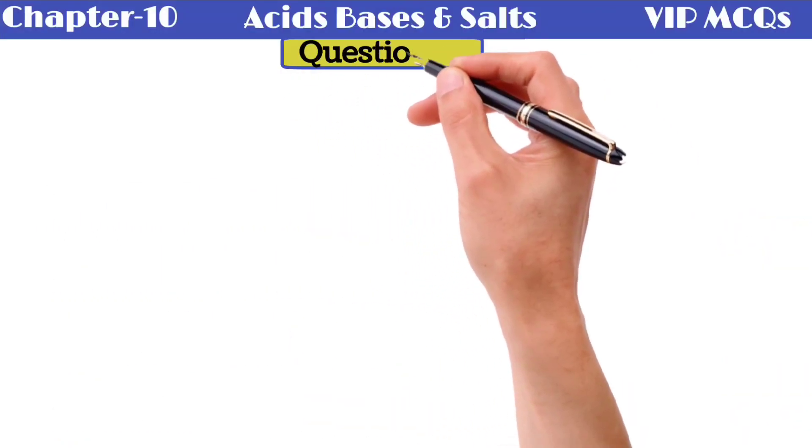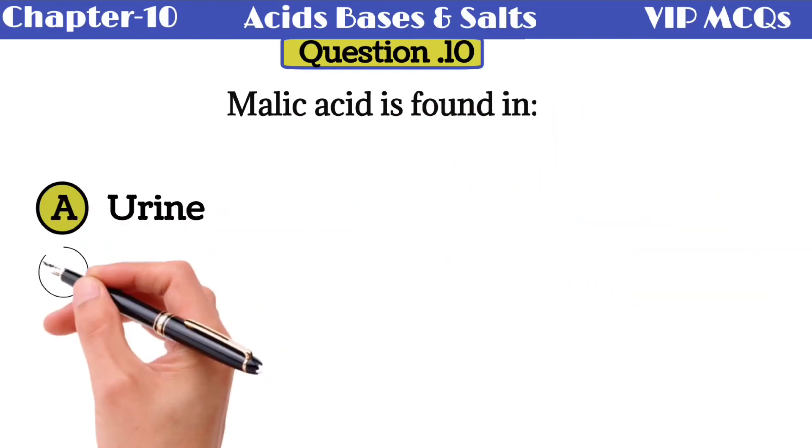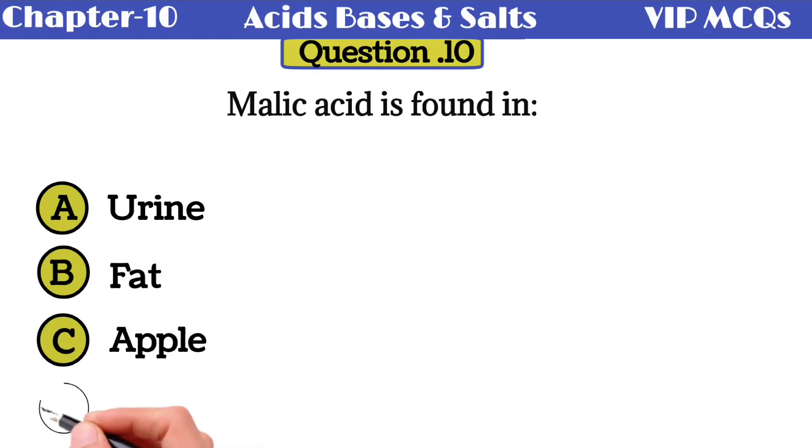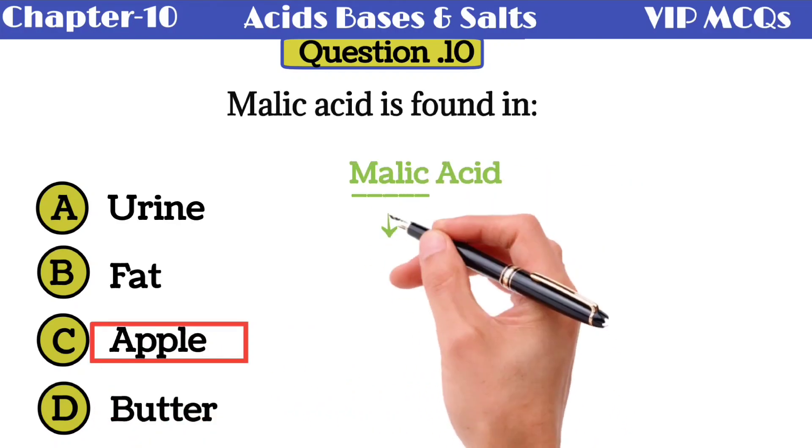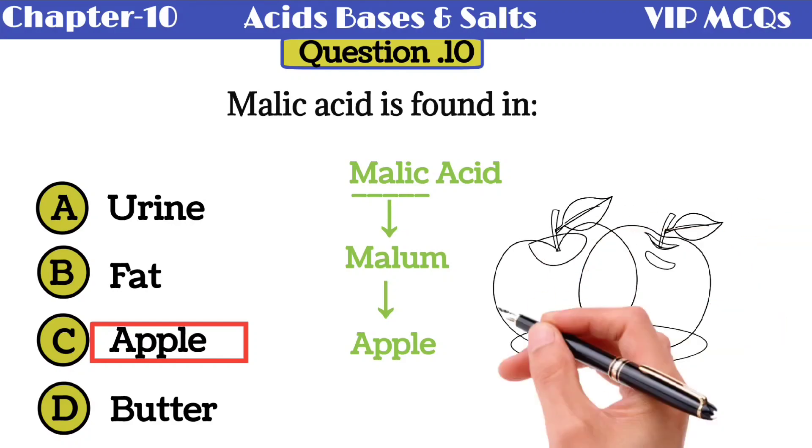Question number 10: malic acid is found in - option A urine, option B fat, option C apple, option D butter. The correct option is apple. Malic acid is named after the Latin word malum, which means apple, because malic acid was first isolated from apple juice.